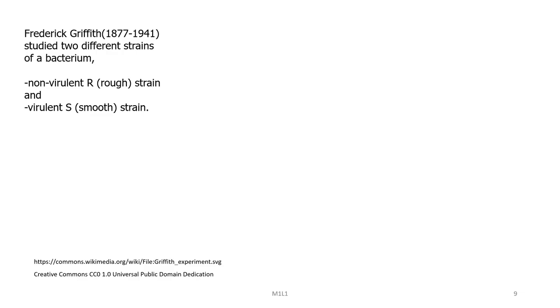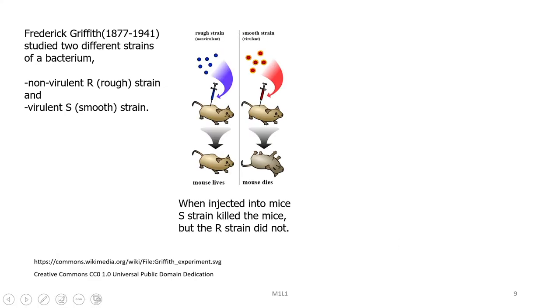Let us now discuss some important scientific developments in genetics. Frederick Griffith studied two different strains of a bacterium: a non-virulent strain and a virulent strain. The non-virulent strain, called the R strain, did not cause any disease, while the virulent strain, called the S strain, causes disease in mice. When injected into mice, the S strain killed the mice, but the R strain did not.